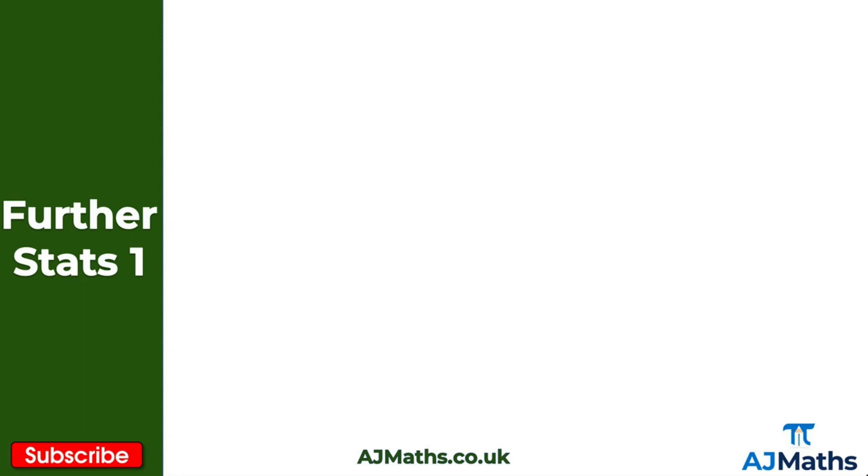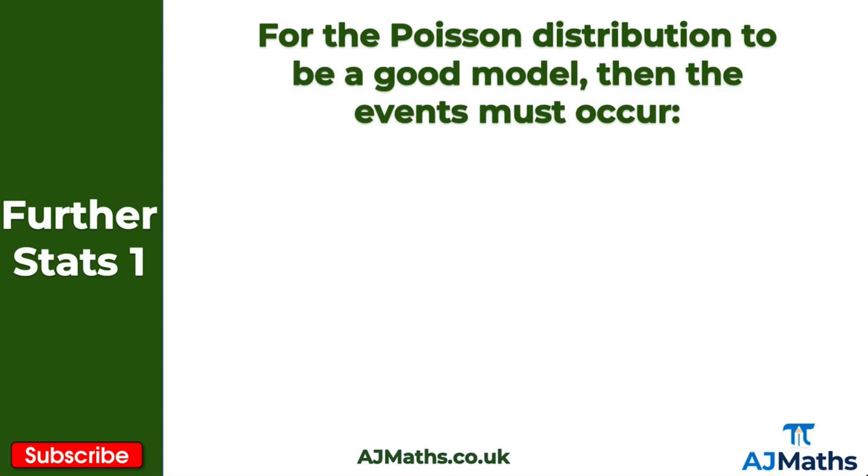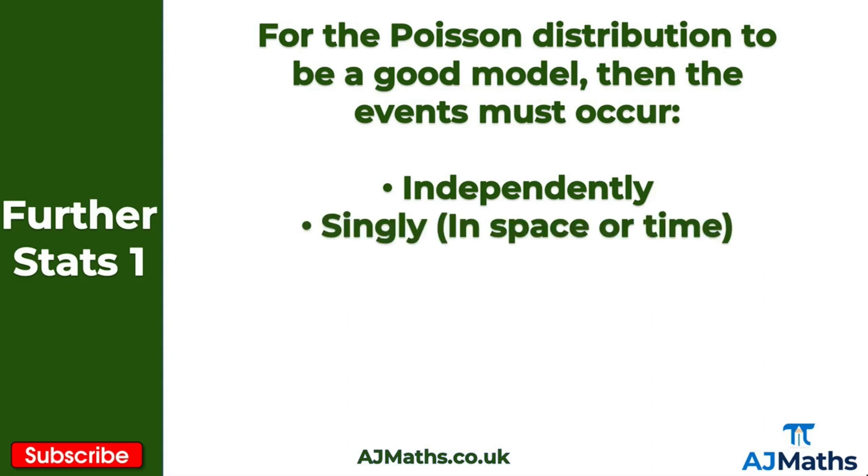So in terms of what conditions do we need here, for the Poisson distribution to be a good model then the events must occur independently, singly, and we say this is for in space or time, and at a constant average rate. So we need those conditions, or we need the events to occur with those three conditions.